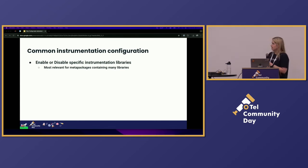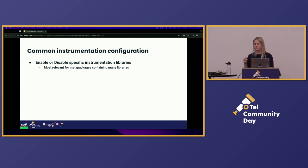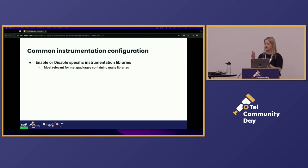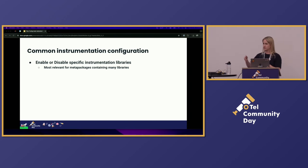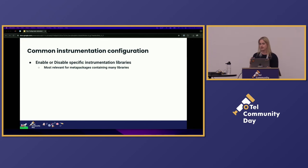The first thing we're looking at is enabling and disabling specific instrumentation libraries. A general rule is that you want to only include the instrumentation libraries you need for your app. Most languages are going to have some kind of meta package that pulls together multiple instrumentation libraries, and then gives you the option to enable or disable specific libraries from there.